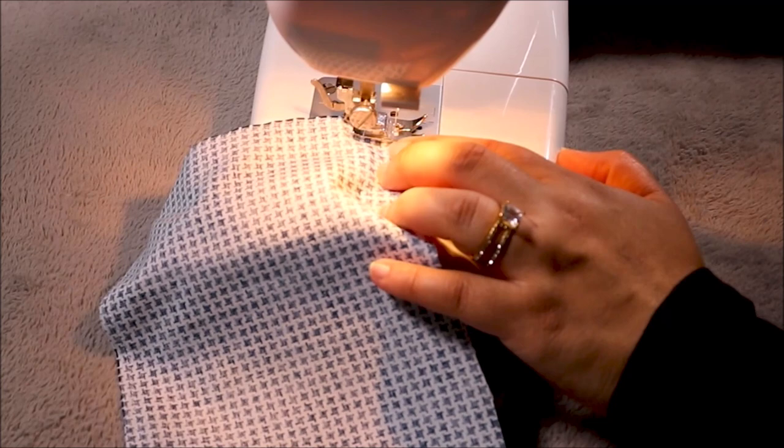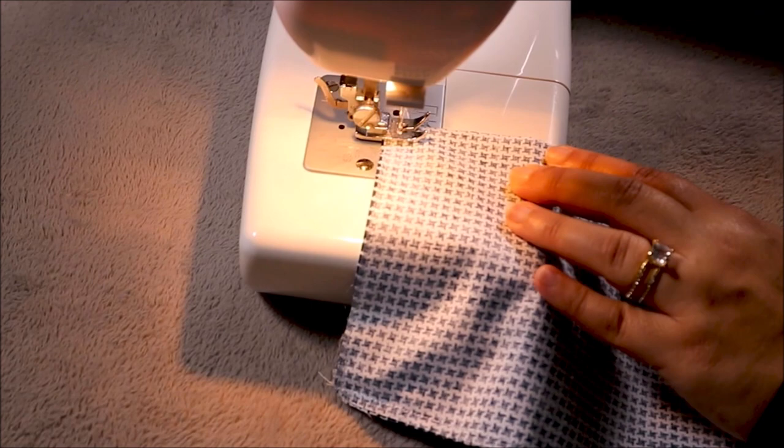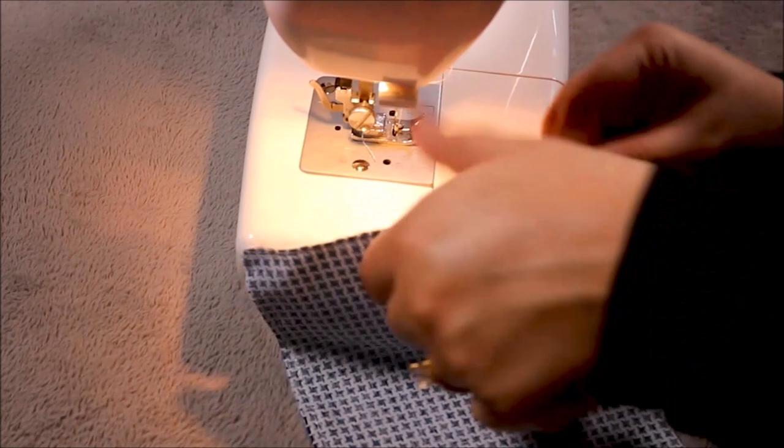Keeping the needle down, I'm going to turn the fabric and I'm going to start doing a straight stitch on this nine inch side. This is the side where I'm going to leave that small gap in the middle, so I'm not going to stitch all the way out.